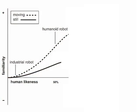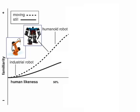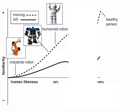Masahiro Mori in 1970 wrote an article for Energy magazine, and he came up with the idea of the uncanny valley. He made the observation that as you make robots appear more human-like, they also seem more familiar — and you would think that at the extreme, they would just become more and more familiar until they're as familiar as a healthy human being.